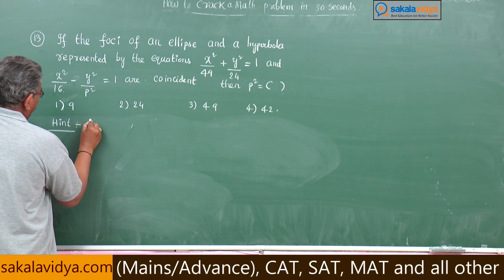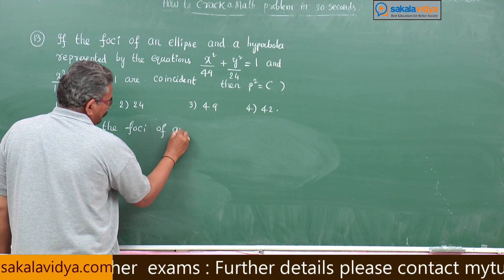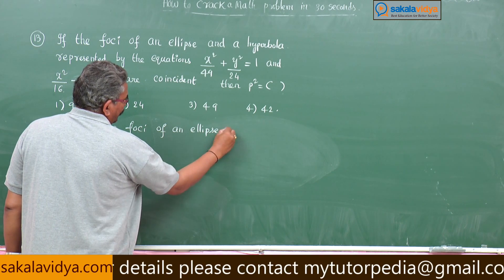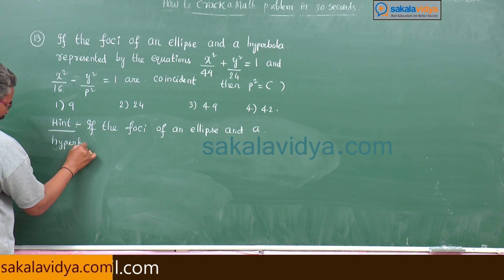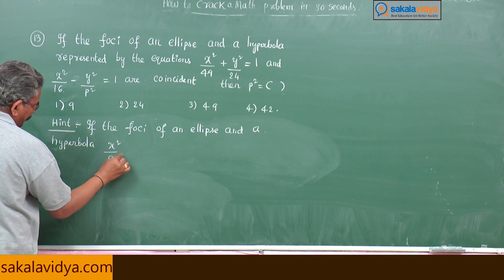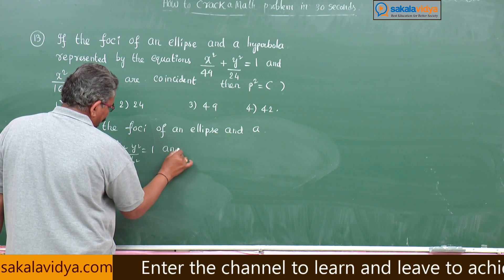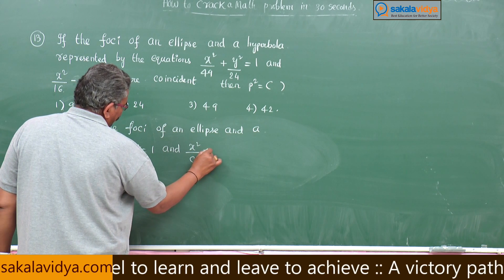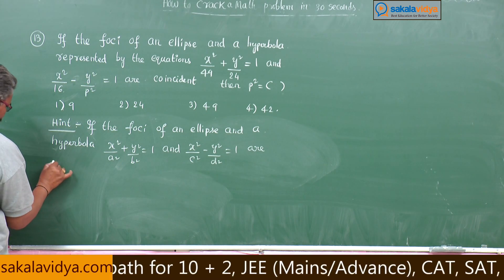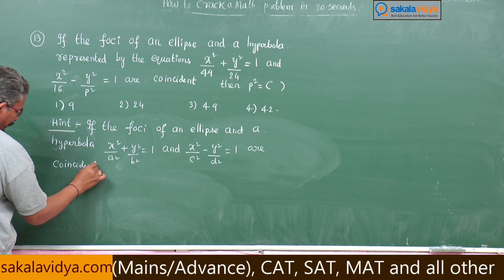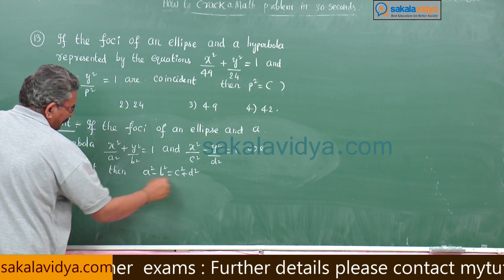If the foci of an ellipse x²/a² + y²/b² = 1 and a hyperbola x²/c² - y²/d² = 1 are coincident, then the condition is a² - b² = c² + d². This is the condition we have to use.